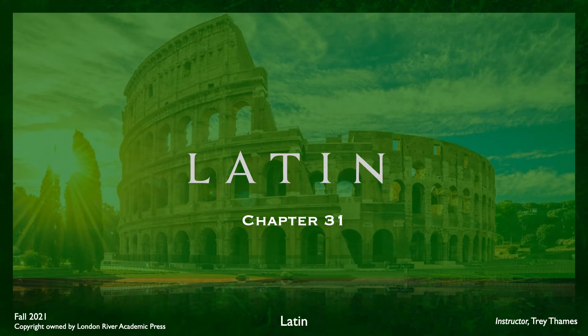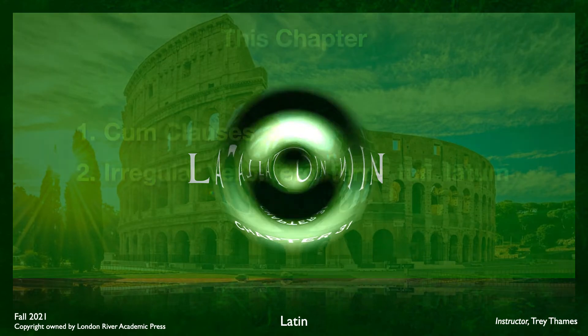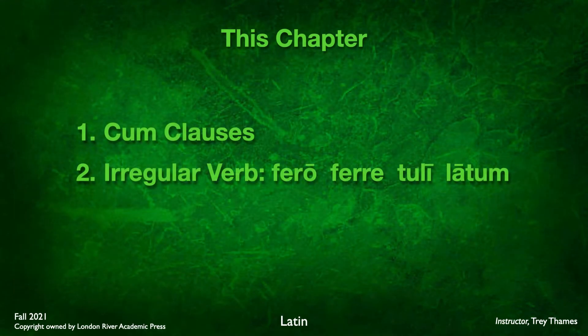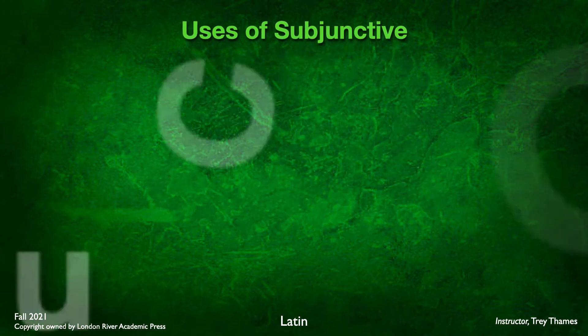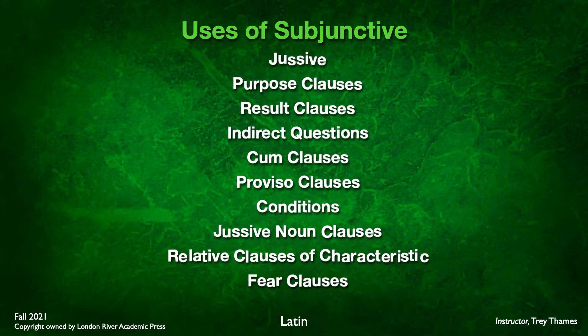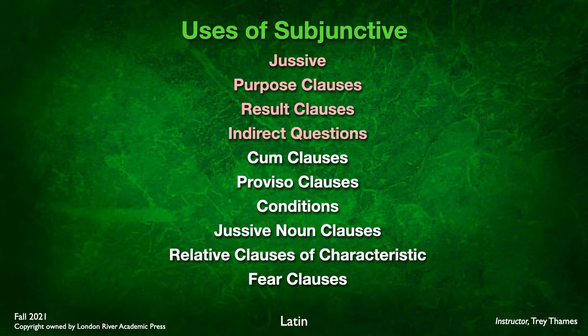Welcome to Wheelock's Latin chapter 31. In this chapter we're going to be exploring cum clauses, and we'll be looking at a new irregular verb, ferro ferre tuli latum. Let's do a quick review of our uses of subjunctive. We have previously studied the jussive, the purpose clauses, result clauses, and indirect questions.